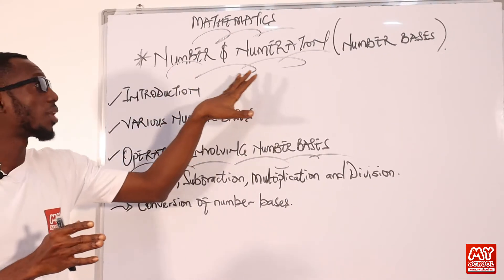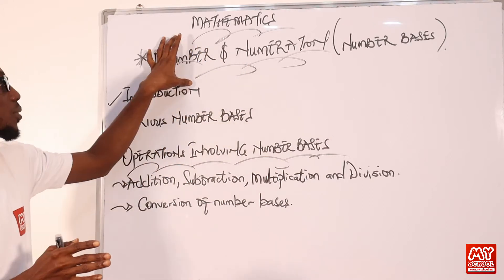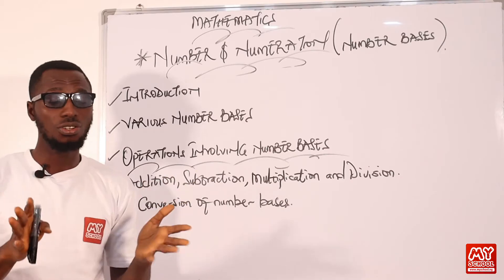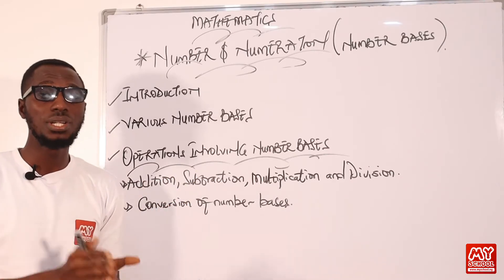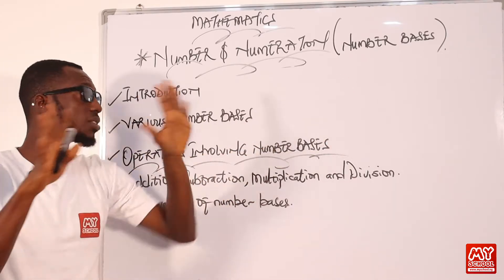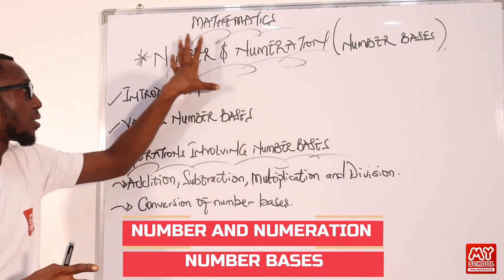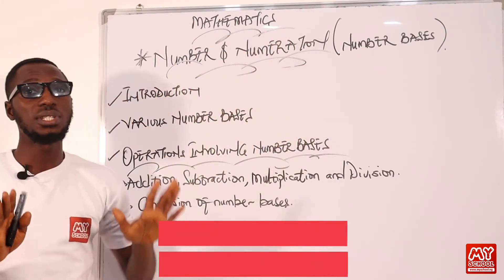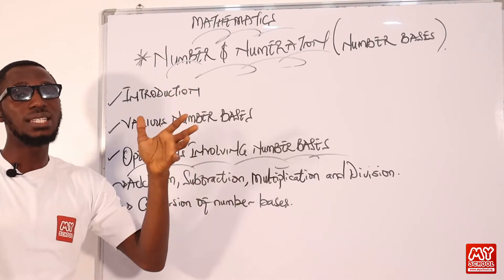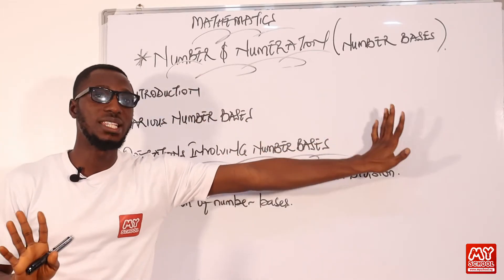For the first unit we have topics compressed into it — that's number and numeration. We talked about sets, sorts, indices and logarithms, variations, number bases, and some other topics. So right now we are considering number bases in unit one: number numeration, in the subject mathematics. Let's have the hierarchy: mathematics → unit one: number numeration → topic: number bases.